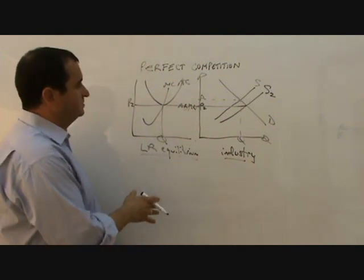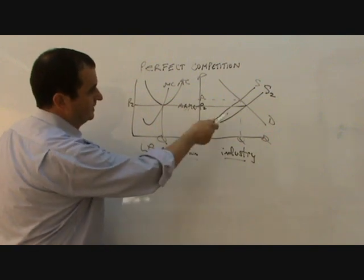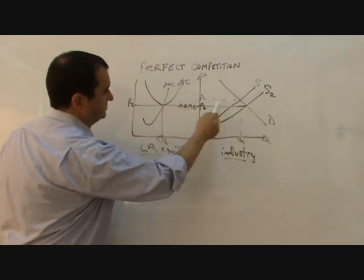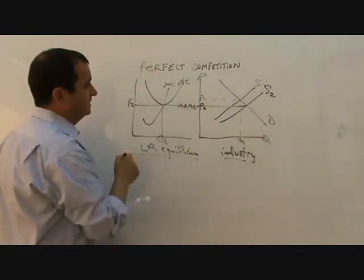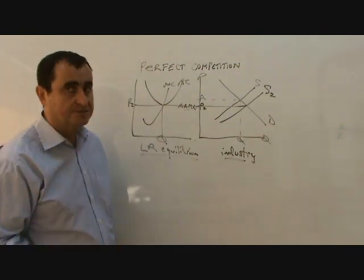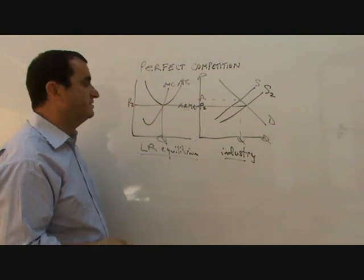I showed you the case where the new firms were entered into the industry, expanding the supply, driving the price down and eroding the profits. But this position is also reached where firms would be making a loss. If firms were making a loss in perfect competition,